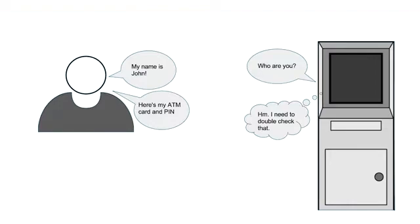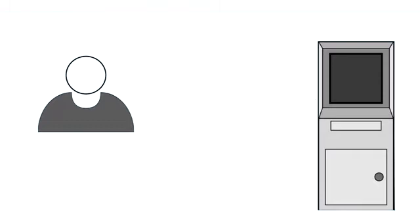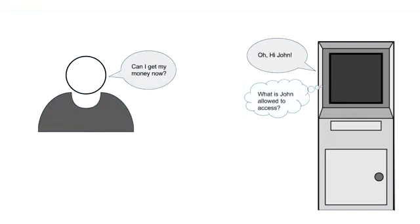Now there's a second step that takes place. We know who you are, but how do we know what you can do? The ATM first asks a question: What does this user have access to? The answer here are the resources you have access to and the privileges or actions you can execute on these resources.